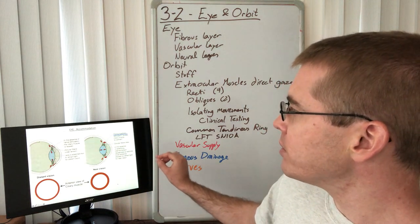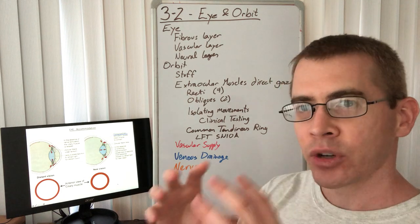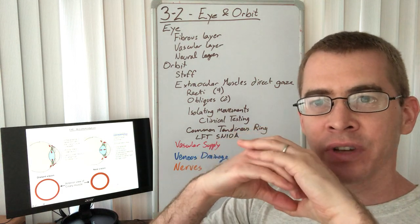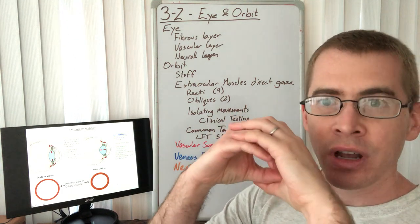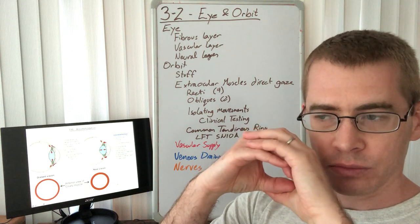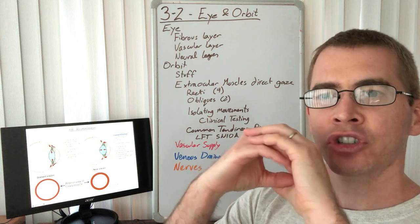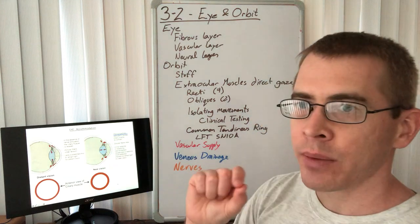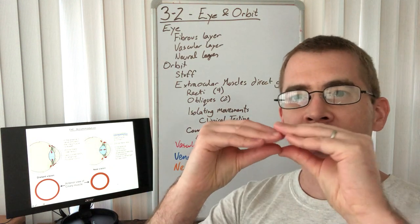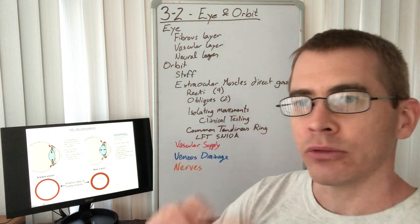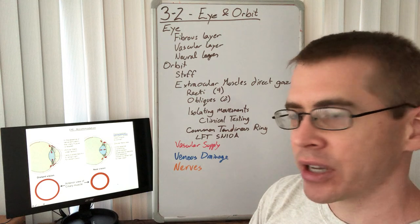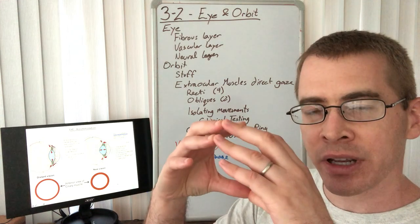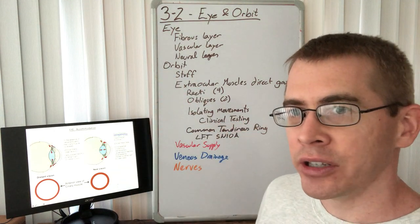With parasympathetic innervation of the ciliary muscle, contraction of this smooth sphincter muscle causes the radius to shorten. As a result, the zonular fibers relax or become slack, allowing the lens to become bulbous and bulge out. This bulging of the lens is the process for focusing on near objects.